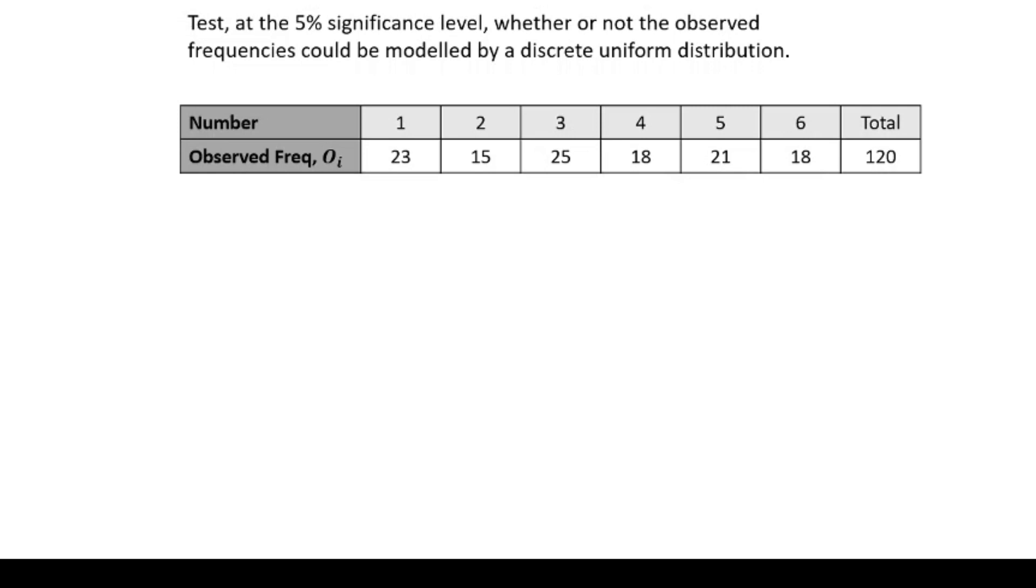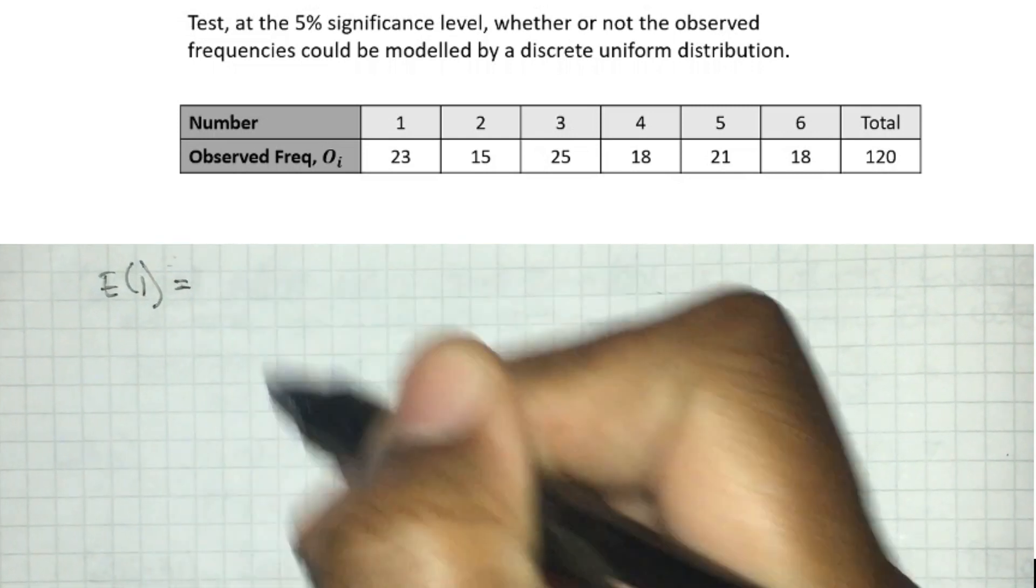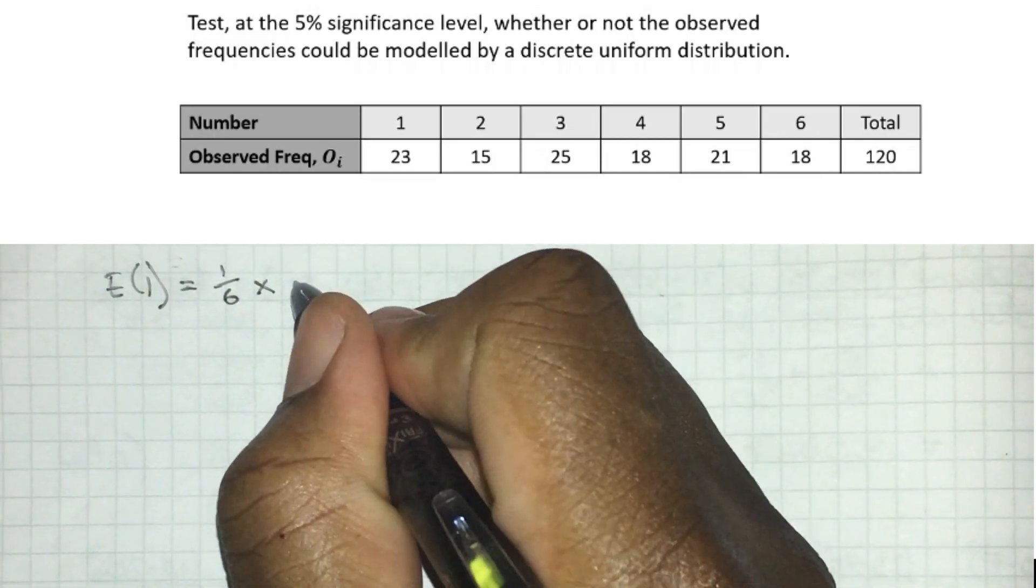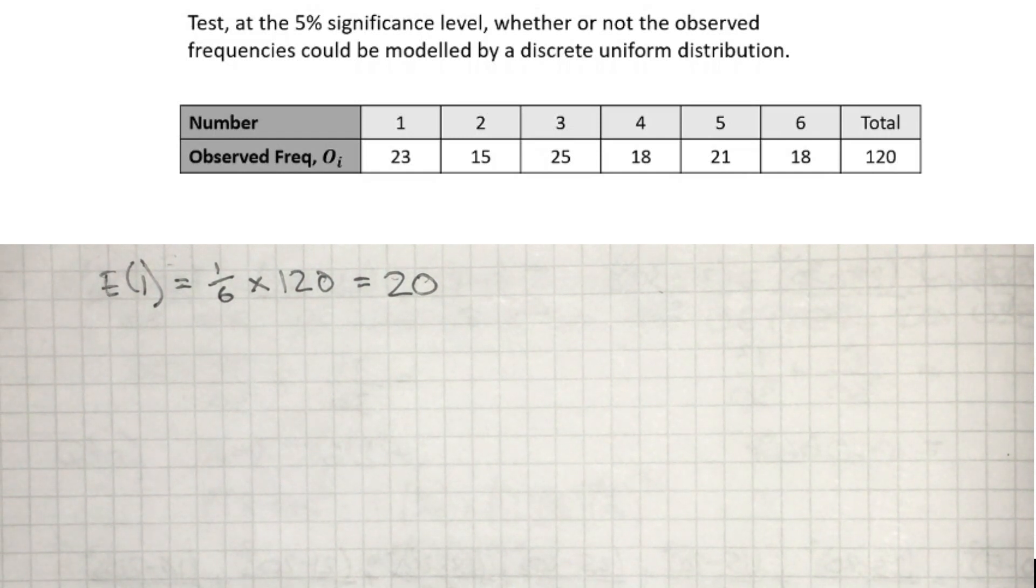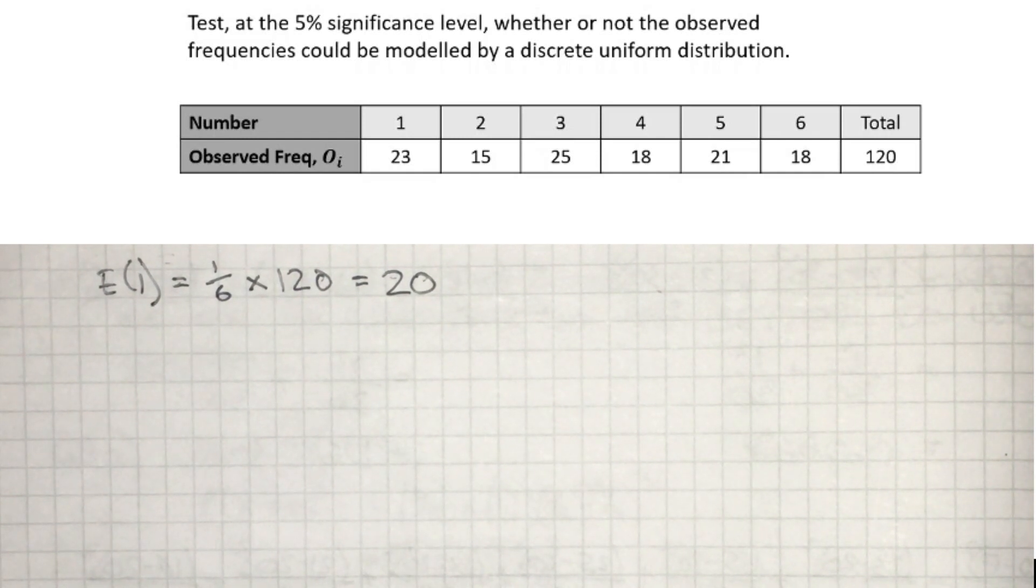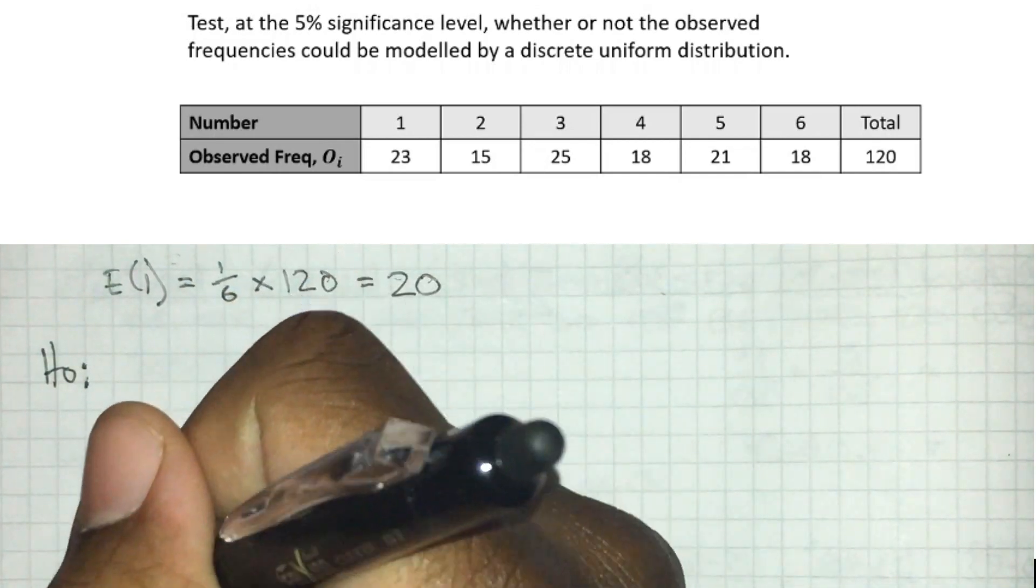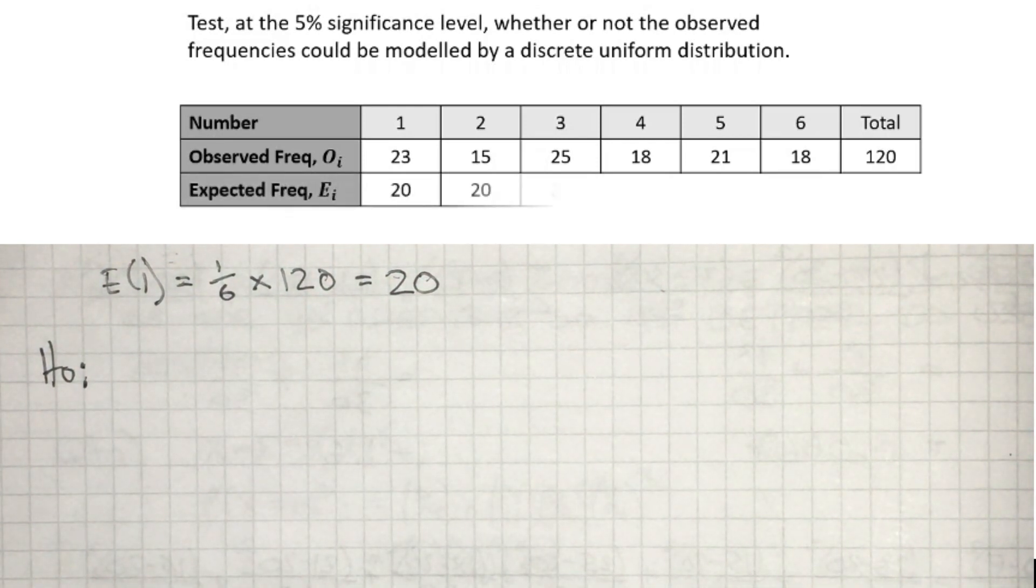The first thing I need to find out is what are the expected values. If this is meant to be discrete uniform, each of these outcomes is equally likely. There's six outcomes, so the probability of each outcome happening is 1/6. If we multiply that by the total number of trials, we know the expected frequency for each outcome is 20.